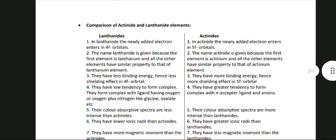Comparison of actinides and lanthanide elements: In lanthanides, the newly added electron enters the 4F orbital. In actinides, the newly added electron enters into the 5F orbital. Lanthanides have less binding energy, hence less shielding effect of 4F orbital. Actinides have more binding energy, hence more shielding effect in 5F orbital.